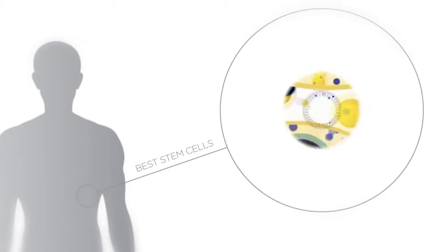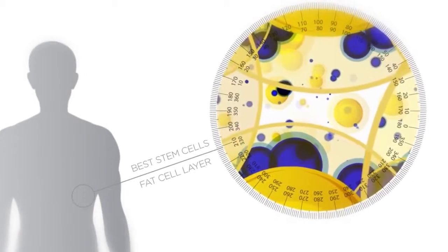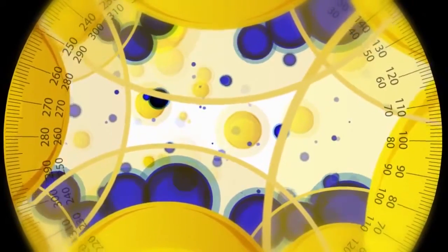The process begins with the search for the best stem cells in the human body. The stem cells are found within the body's fat layer. By using a sterile and specialized syringe, doctors extract a mixture of fatty tissue and a group of healthy stem cells.